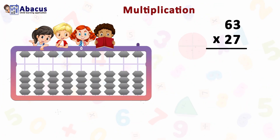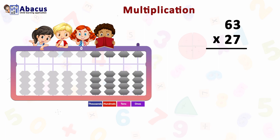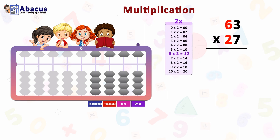Let's take the example of 63 multiplied by 27. Here we have a total of four numbers — 6, 3, 2, and 7 — so the answer is also in four digits. We have to use the first four rods from the right side: ones, tens, hundreds, and thousands rods.